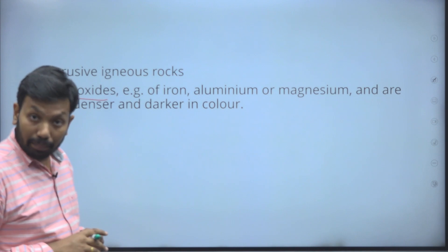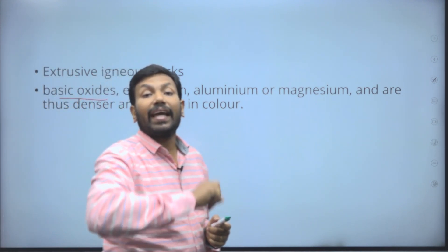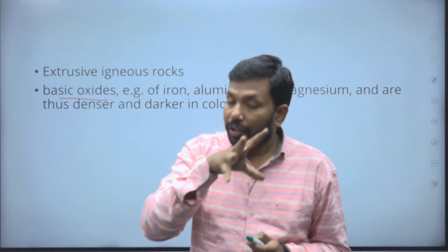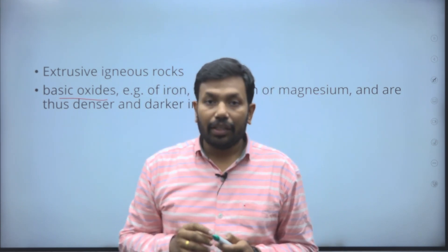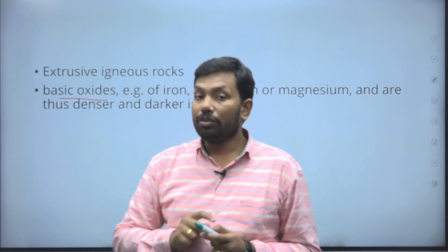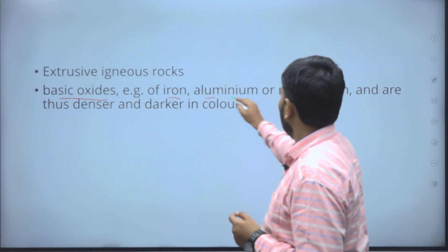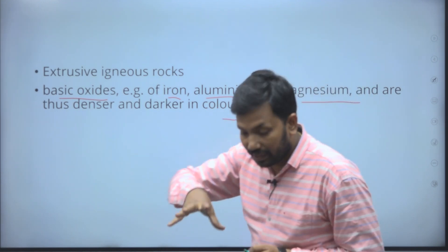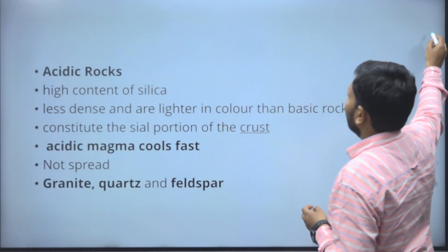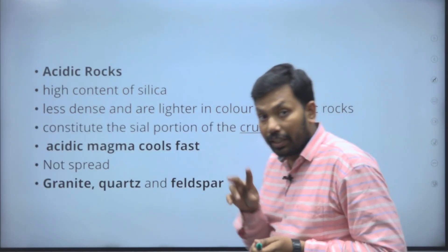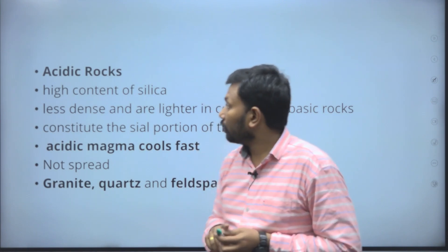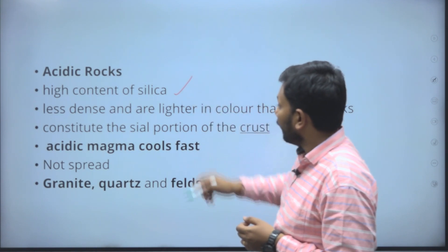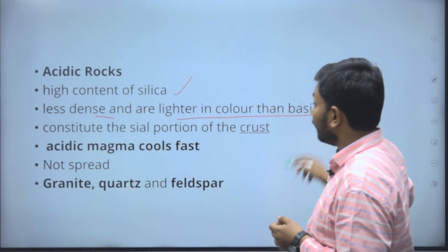Because he is asking about characteristics, you have to write about the chemicals present in the rocks and where you can find them in the world — even Indian examples are very good. Iron, aluminium, and magnesium make extrusive igneous rocks denser and darker in color. We generally classify igneous rocks into acid rocks and basic rocks. Acid rocks have high silica content, are less dense, and lighter in color than basic rocks.